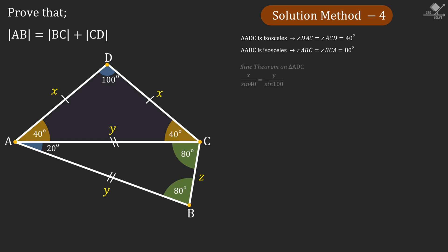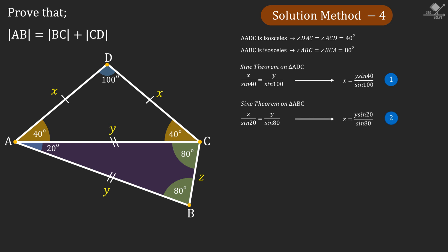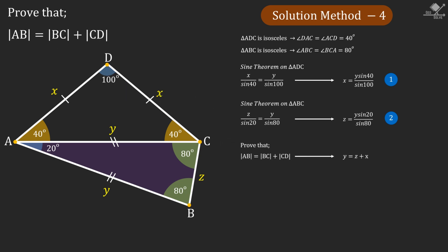Now let's apply the sine theorem on triangle ADC. From here x will be equal to y times sine 40 over sine 100. This time let's apply the sine theorem on triangle AVC. From here z will be equal to y times sine 20 over sine 80. Now let's see what we are trying to prove in terms of x, y, and z.